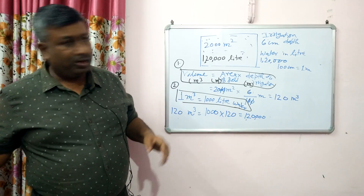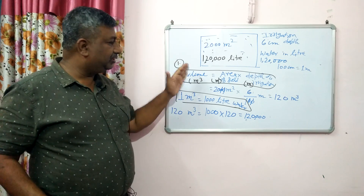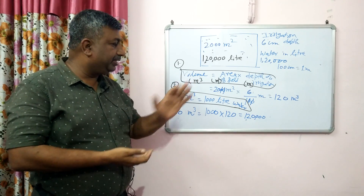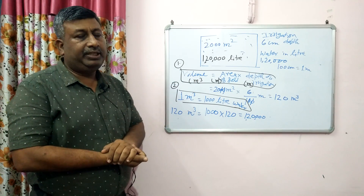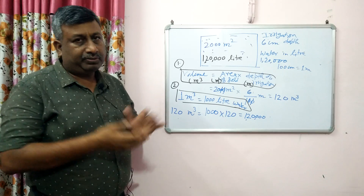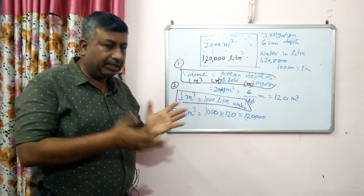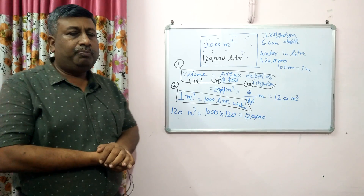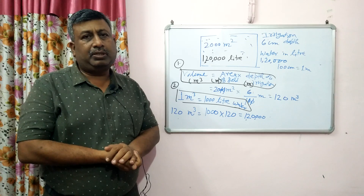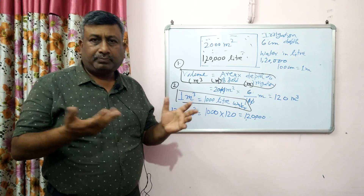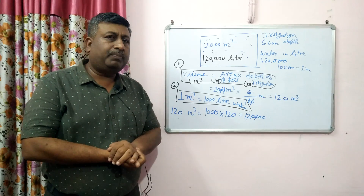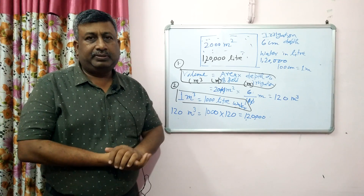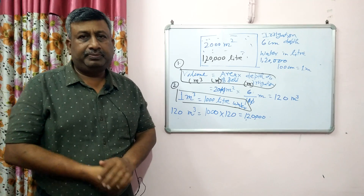So two formulas are very important: first, calculate the volume as area multiplied by depth; second, 1 cubic meter equals 1000 liter water. Through this calculation we can know how much liter water is required for small plots or large plots. Thank you very much.